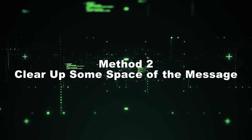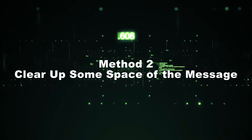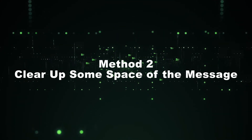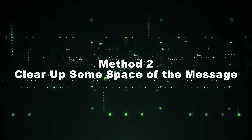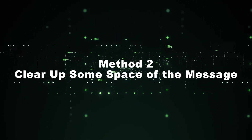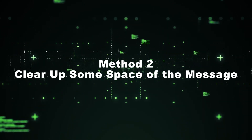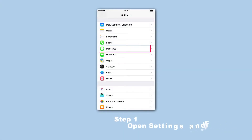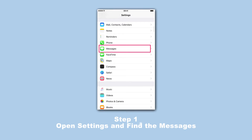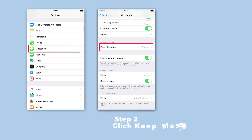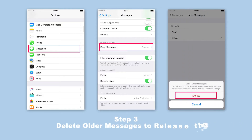Method 2: Clear up some space of the message. When you get rid of the frozen screen, you should go and clear up some space in the message app to prevent this from happening again. Step 1: Open Settings and find Messages. Step 2: Click the Keep Messages button. Step 3: Delete older messages to release the space.